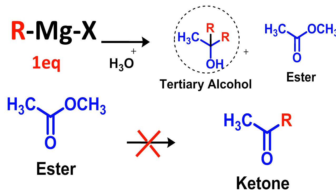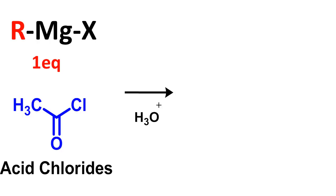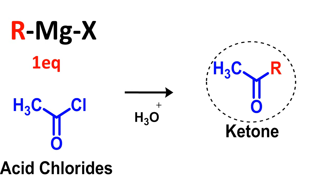So how can we prepare a ketone from a Grignard reagent? The simple answer is: treat an acid chloride with a Grignard reagent. The reactivity of the Grignard reagent toward acid chloride is much higher, and if you use only one equivalent you will be able to isolate the ketone. I hope you have understood this lecture. If there is any doubt, you can ask in the comment section. If you liked it, please share and subscribe to our channel, Global Online University.